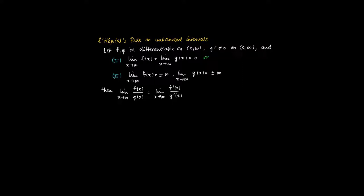And this holds if only the latter exists or equals plus or minus infinity. So if f prime of x divided by g prime of x, for instance, goes to minus infinity, then we know that the limit of x to infinity of f(x) divided by g(x) goes to minus infinity.